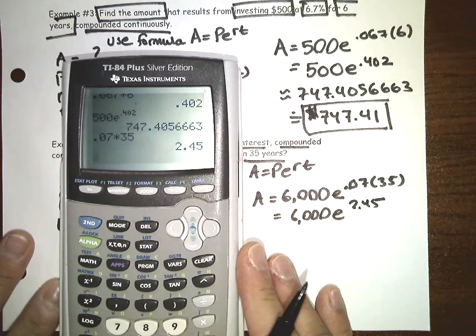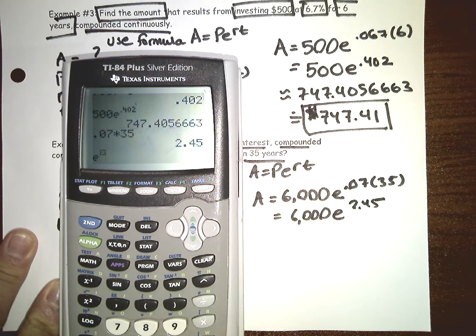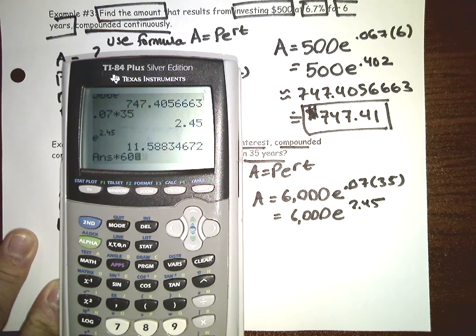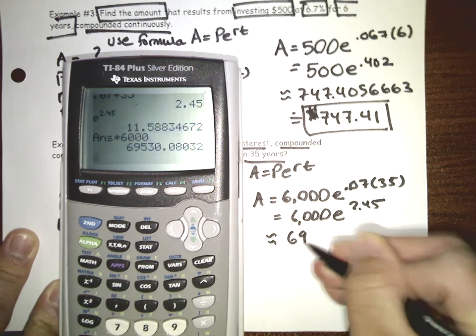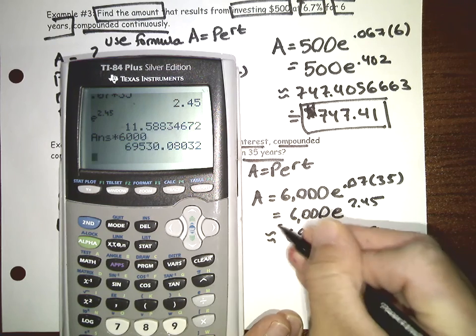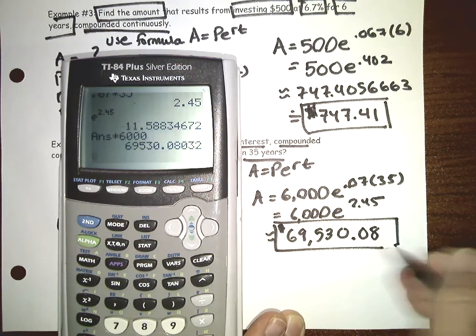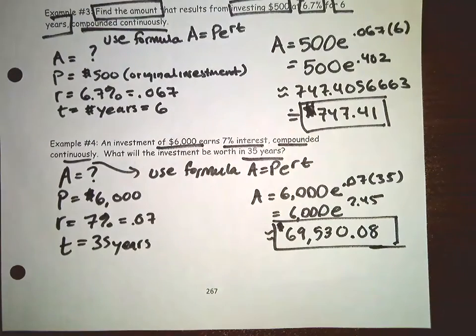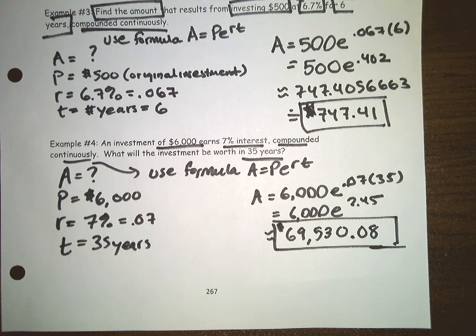Using a calculator: 6,000 times e to the 2.45 gives approximately $69,538.08. After 35 years, you make much more than your original investment — which is why people invest in stocks and bonds. Over time, investments like these can grow substantially.